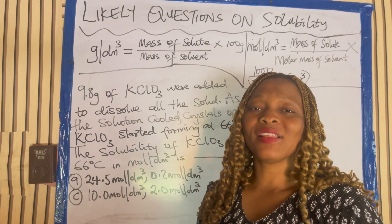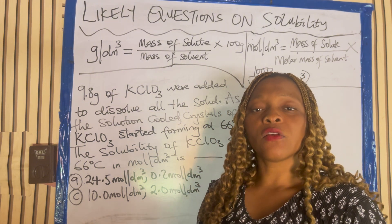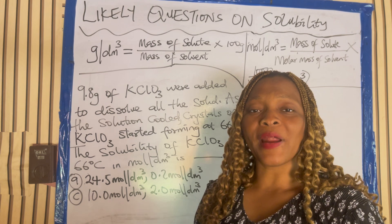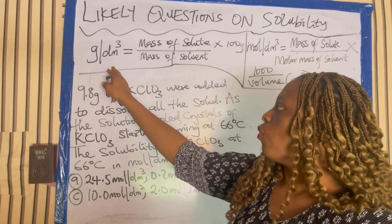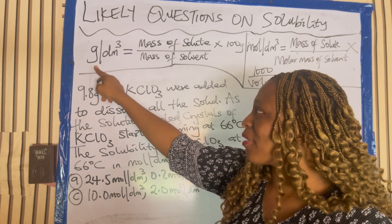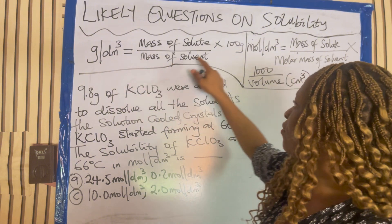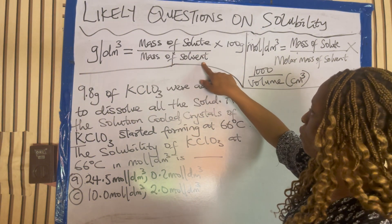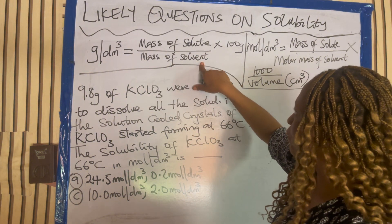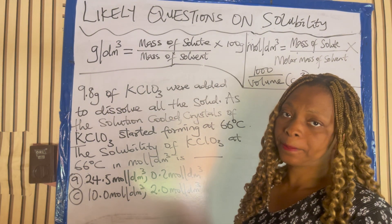Number one is that you may be asked to calculate solubility in gram per dm cube. When you are calculating solubility in gram per dm cube, the formula is going to be mass of solute over mass of solvent times 100 gram.